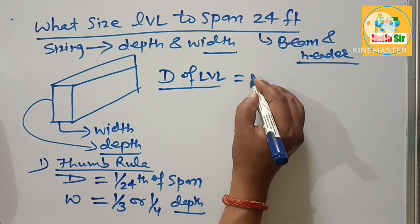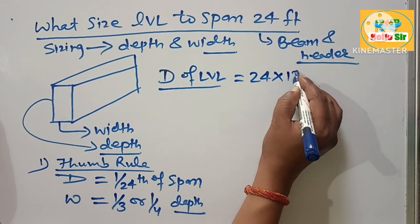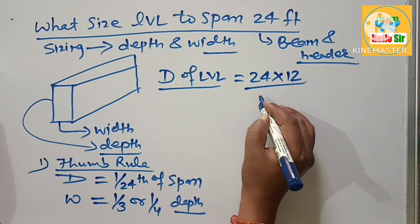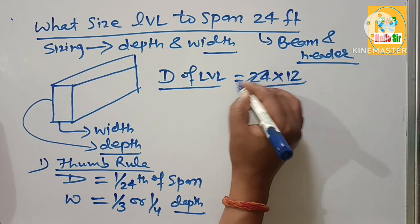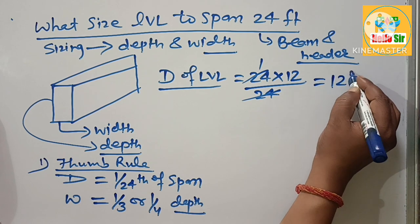Given the span length 24 feet, change to inches: 24 times 12, it will come to about 288 inches.